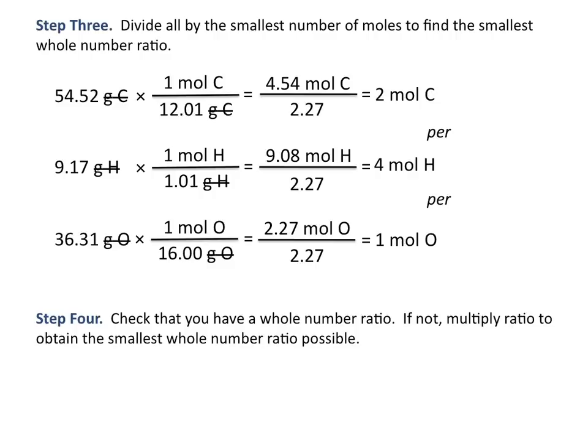Sometimes even after dividing by the smallest number of moles, you still won't have a whole number ratio, and you may need to multiply your mole ratio by a different number. For example, if you had 2 moles of carbon per 4.5 moles of hydrogen per 1 mole of oxygen, multiplying all values by 2 would give whole numbers. But because we already have a whole number ratio, the empirical formula is C2H4O.